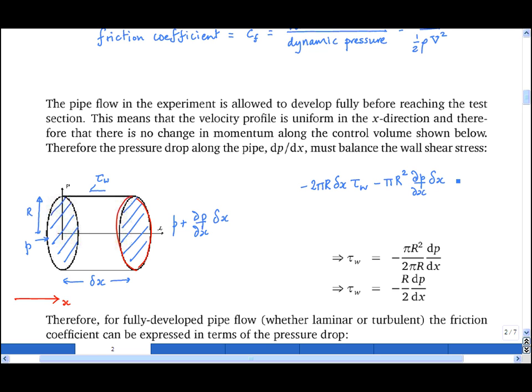Because we have reached steady state within the pipe, there's no accumulation of momentum within the control volume, i.e. no acceleration, and so this is equal to zero. Now we use the fact that p is a function of x only to go from the partial derivative partial dp by dx to the ordinary derivative dp by dx. We rearrange the expression in terms of tau w, the shear stress.